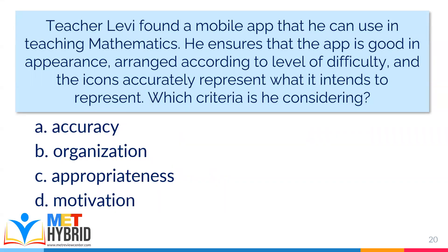Teacher Levy found a mobile app to use in teaching mathematics. He ensures the app is good in appearance, arranged according to level of difficulty, and icons accurately represent what they intend to represent. Which criteria is he considering? A, accuracy; B, organization; C, appropriateness; D, motivation. The answer is letter B, organization. Since Sir Levy is checking the appearance of the app, ensuring contents are arranged according to difficulty and icons represent what they intend to, the answer is organization.